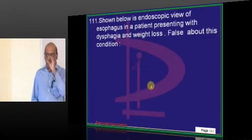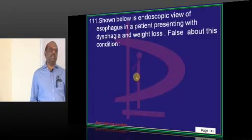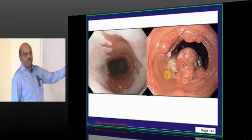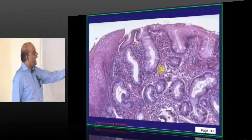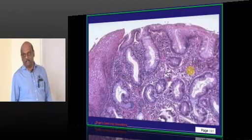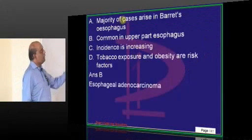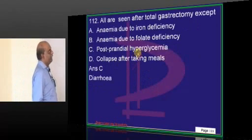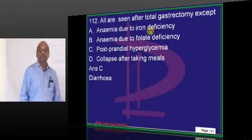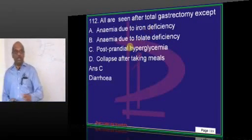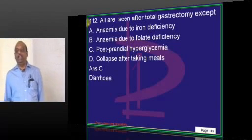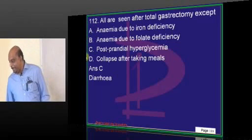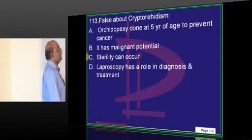If you do endoscopy in a patient with dysphagia and weight loss and see a mass with an adenocarcinomatous pattern, adenocarcinoma is more common at the lower end of the esophagus. After total gastrectomy, postprandially there is hyperglycemia that develops — not hypoglycemia — that is what you need to remember.